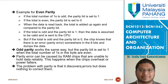Odd parity works the same way, except when the total number of 1s inside the data is even, it is set to 1 instead of 0; and when odd, it is set to 0. Parity error can be caused by RAM chips that are unable to hold data reliably, which happens when the chips overheat or have power filter issues. The problem with parity is that it discovers errors but does nothing to correct them.